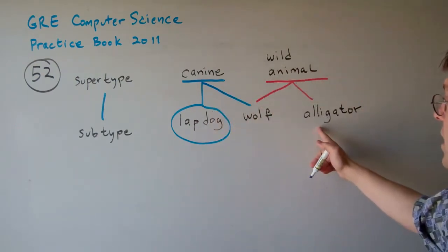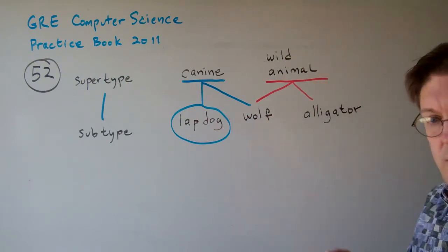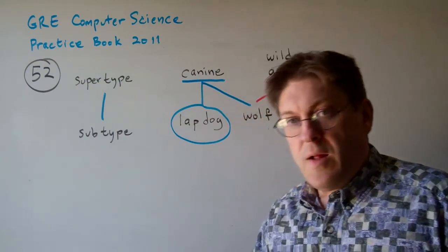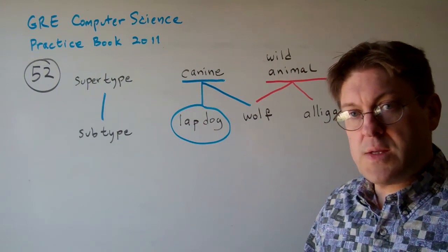Same thing for alligator. Alligator is a wild animal. Wolf is a wild animal. Wild animal just means lives in the wild, but there's going to be different things there. So hopefully that illustration shows you that the answer to 52 is A.